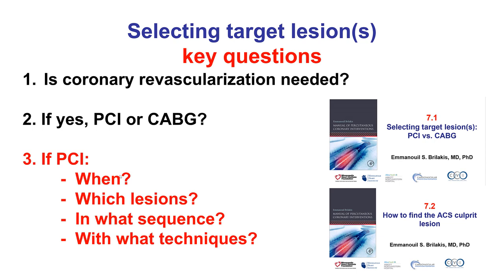The key questions that should be asked to determine the target lesions are: first, whether coronary revascularization is needed or not — not every patient with coronary lesions requires revascularization. If revascularization is indicated, whether it should be done with PCI or with coronary bypass graft surgery. Those first two questions were discussed in detail in video 7.1, as well as video 7.2, which discusses finding the ACS culprit lesion.